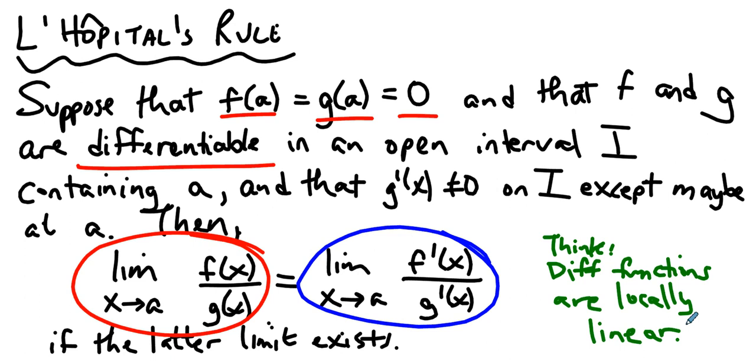If you zoom in close enough, everything is a line. This is a curvy function. This is a curvy function. But if we zoom in at x equals a, this curvy function becomes its tangent line. This curvy function becomes its tangent line, and to compare tangent lines, all we need to compare are the slopes.